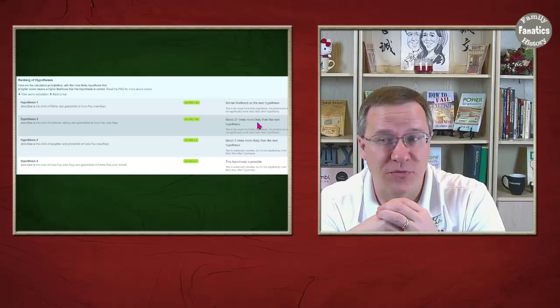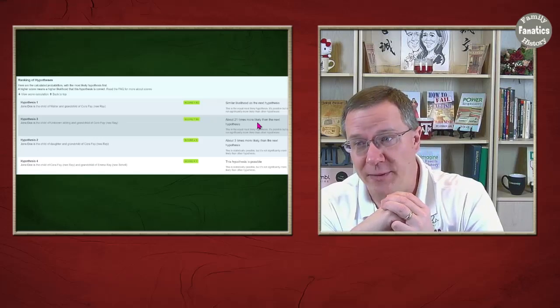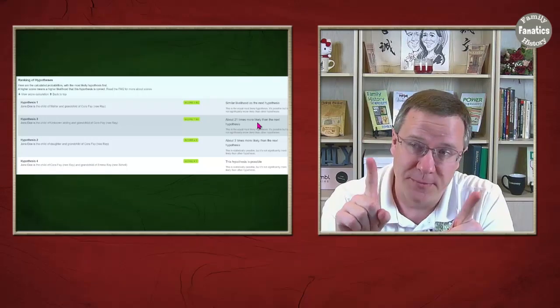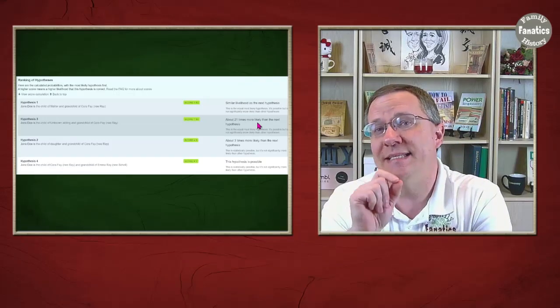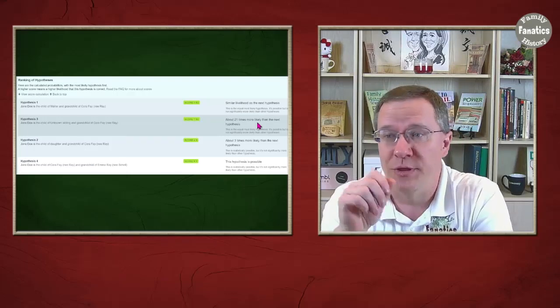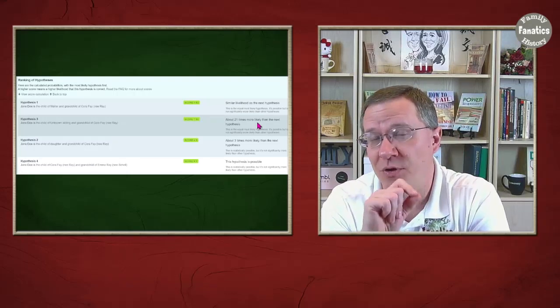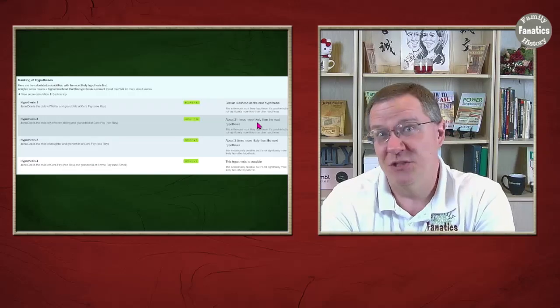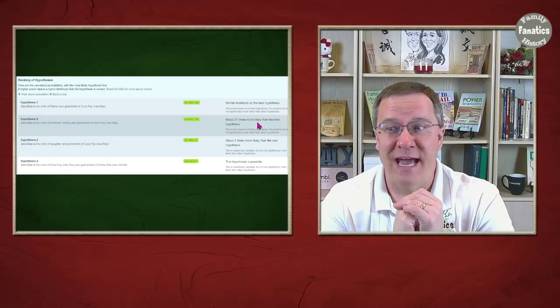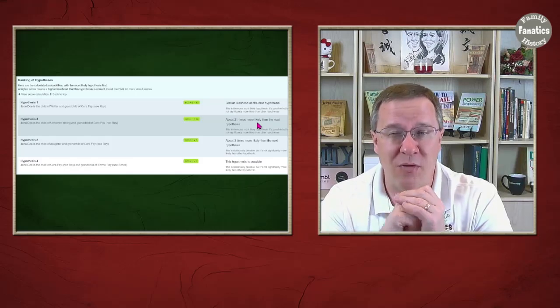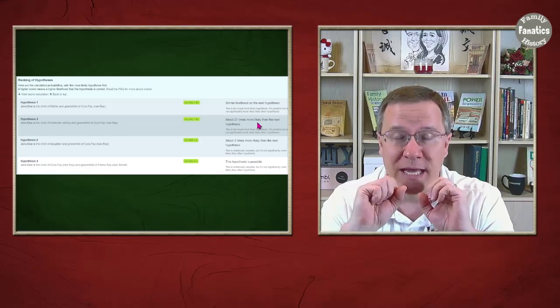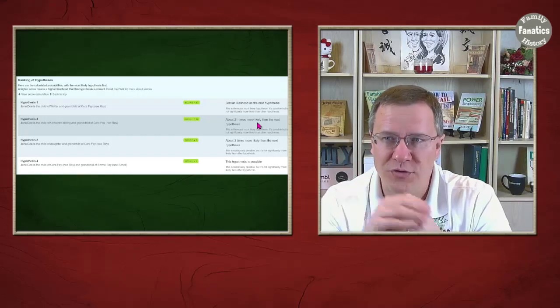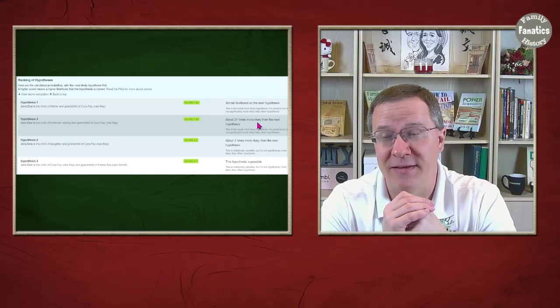Finally we have hypothesis 4 that Jane Doe is the child of Cora Fae. And you'll notice that is a score of 1. So it's actually 63 times more likely that Jane Doe is the grandchild of Cora Fae through either Walter or some other unknown person who was not put on the chart than that Jane Doe is the child of Cora Fae. So to me that tells me that this one at the bottom I'm not really going to worry about until I've eliminated all possibilities from the other ones. And in particular I'm going to be focused on Walter and any other kids that Cora Ray might have had.